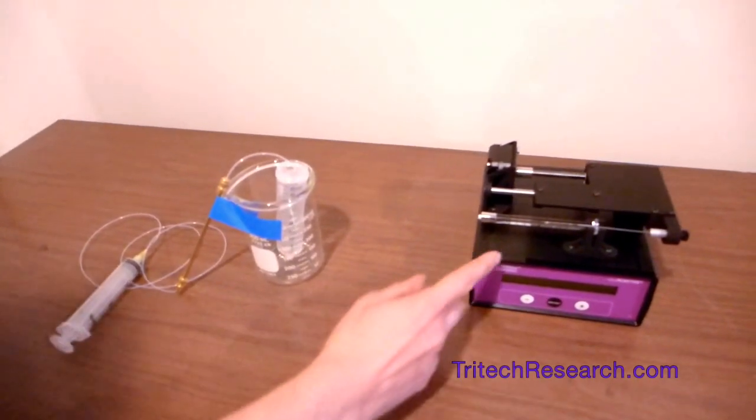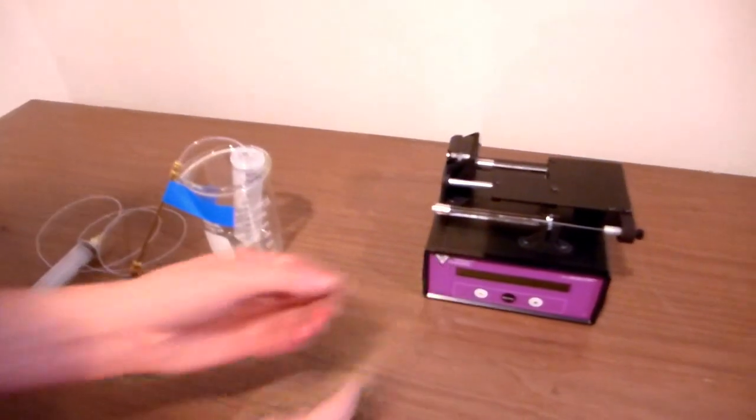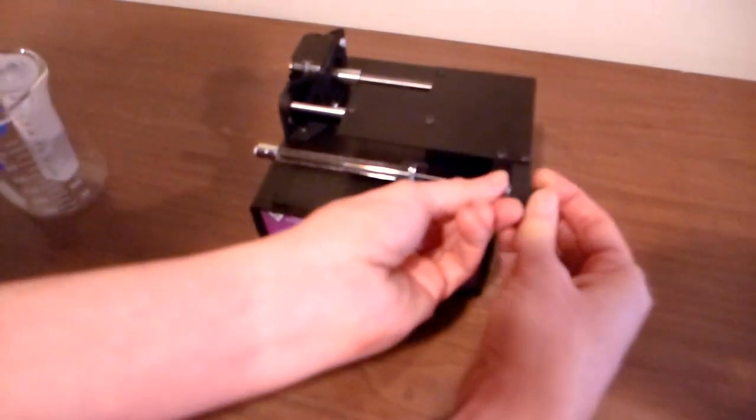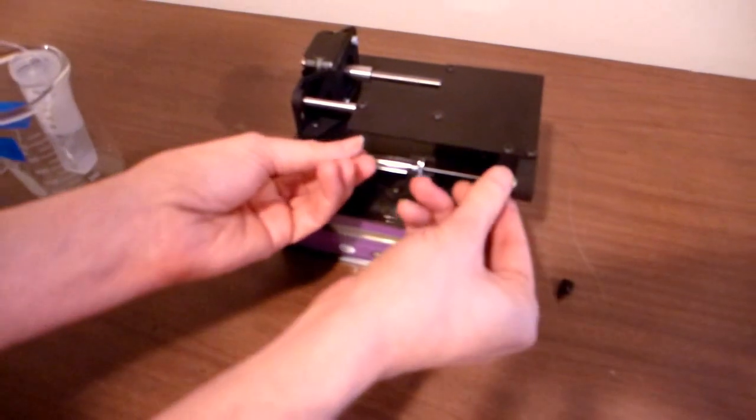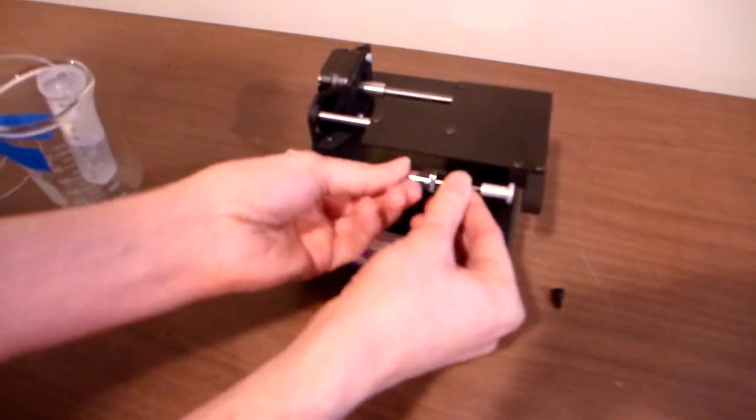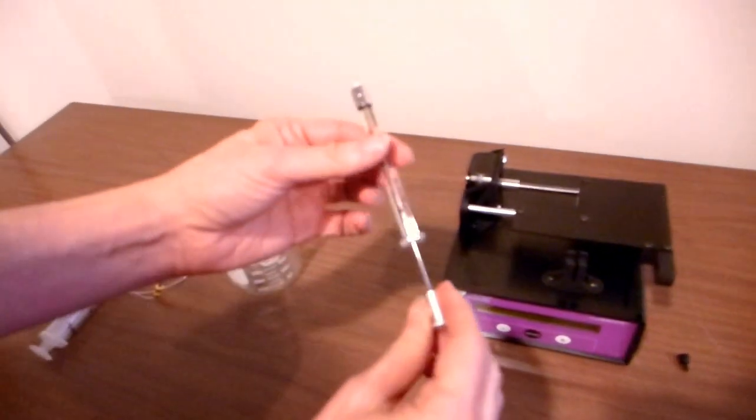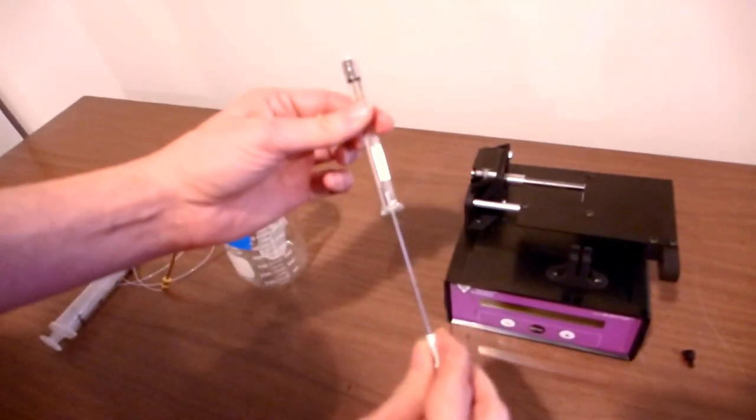All right, so here's the syringe on the injector and it's very easy to remove. There's just a thumb screw right here that you take out and then you just lift the syringe right out of its clip. Now we're going to take the plunger out for a while while we're doing this.